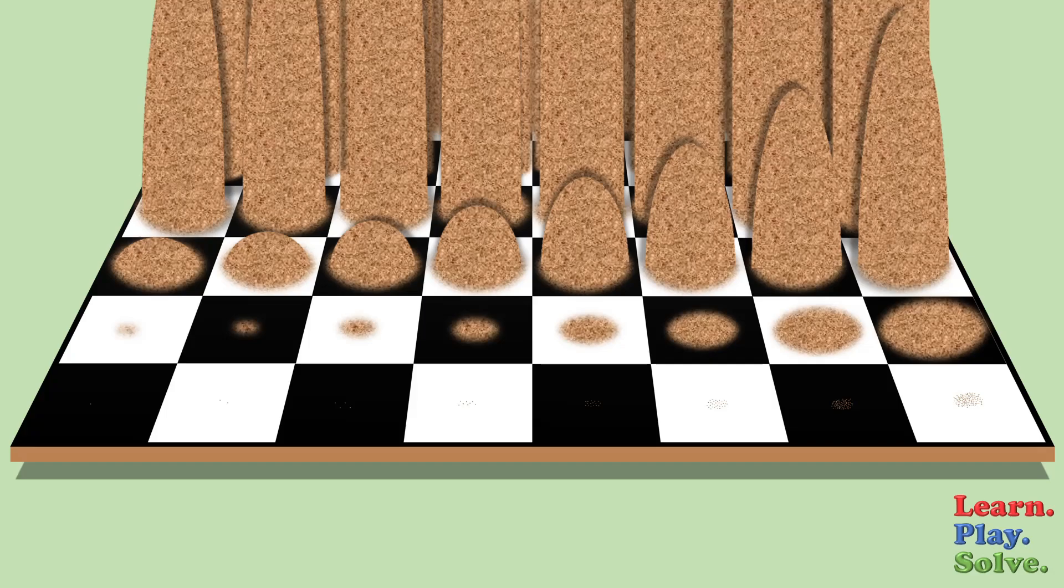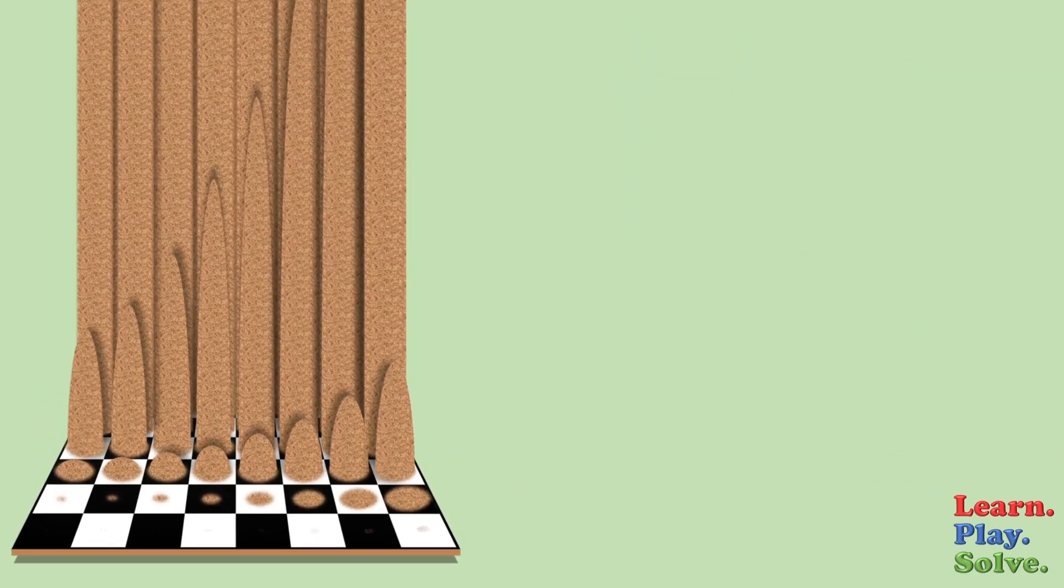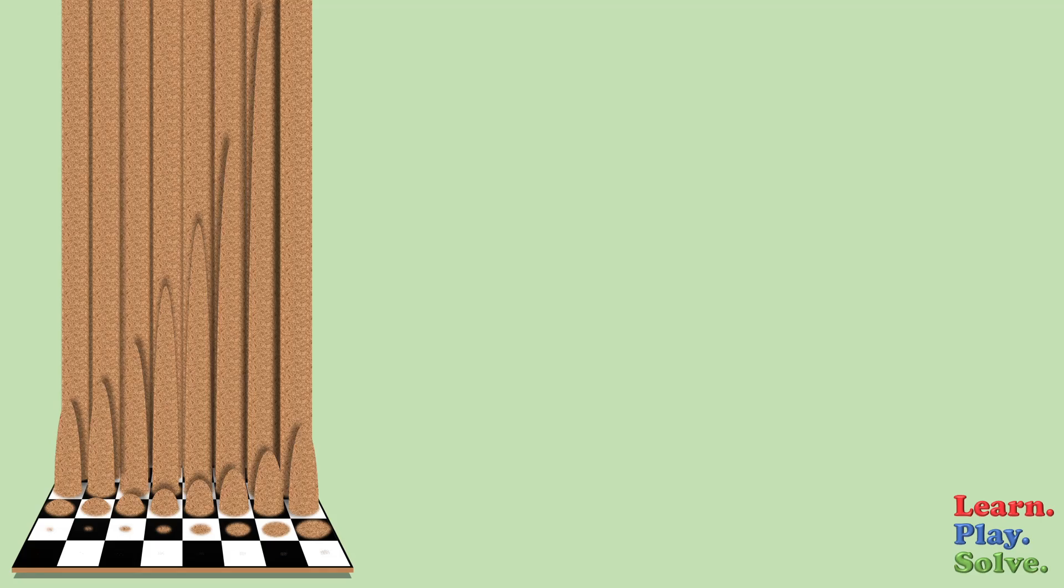Let's figure out exactly how many grains of sand are on this chessboard. We can start by calling the sum of all the sand, S. The first square has one grain of sand. The second square has two. The third square has four, but instead of four, we can write that as two to the second power.